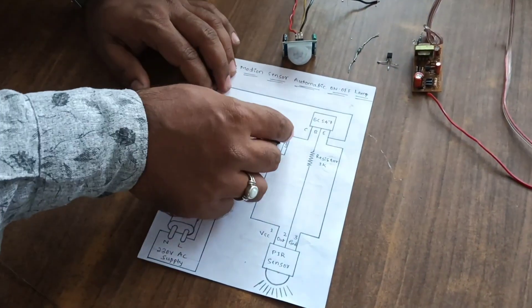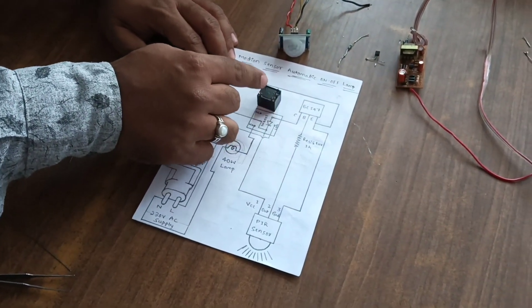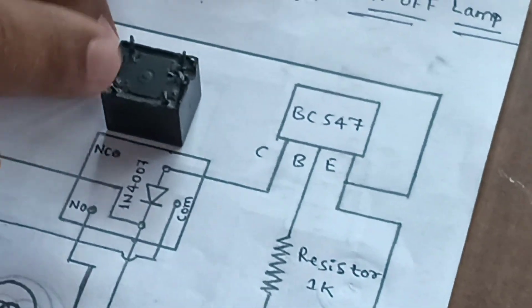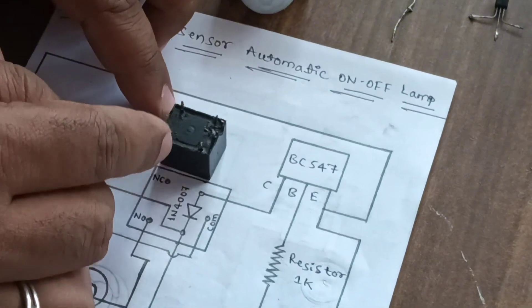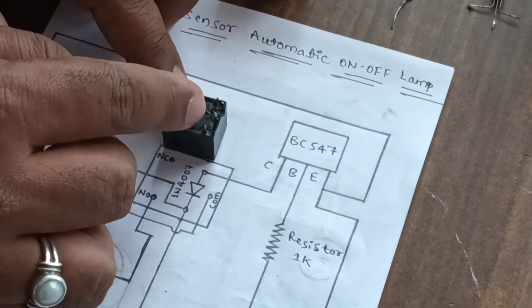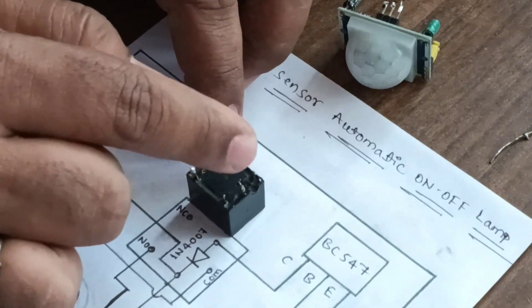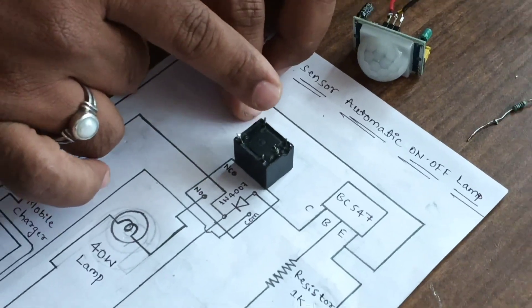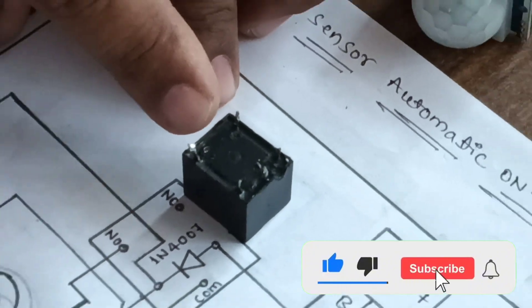In this relay, we know that five terminal points are there. This point and this point is coil connected. Between these two points, coil is inside the relay, and this is the common midpoint of these two. This is the NC and this is NO.